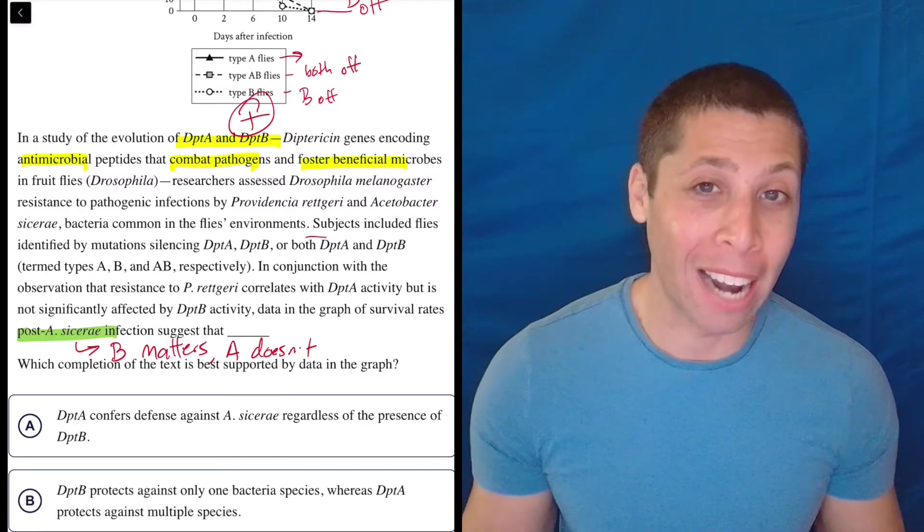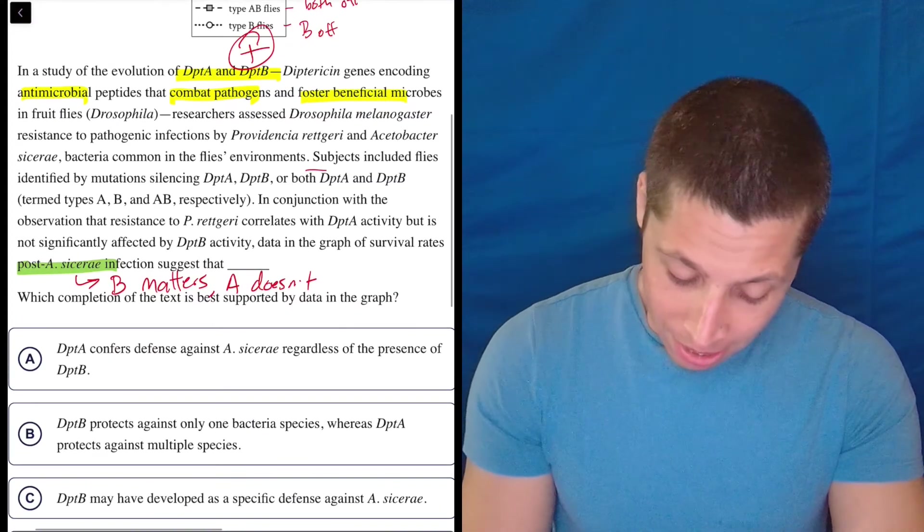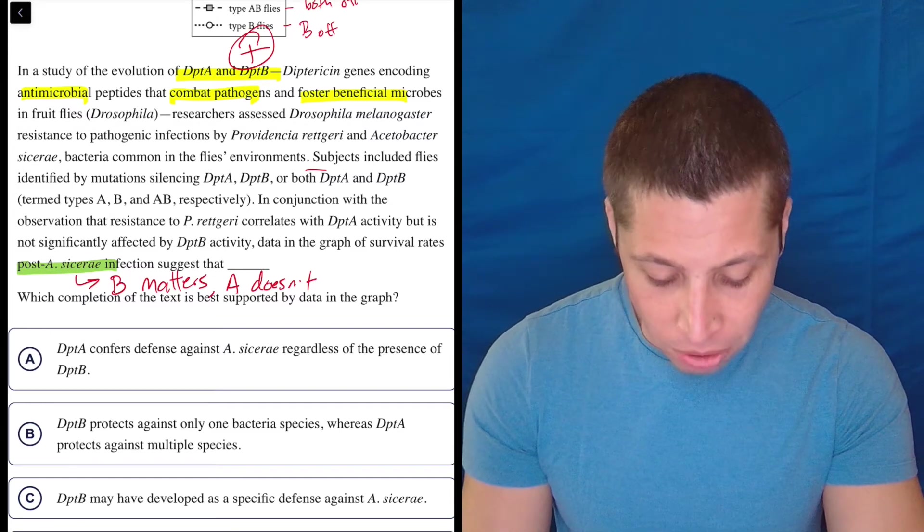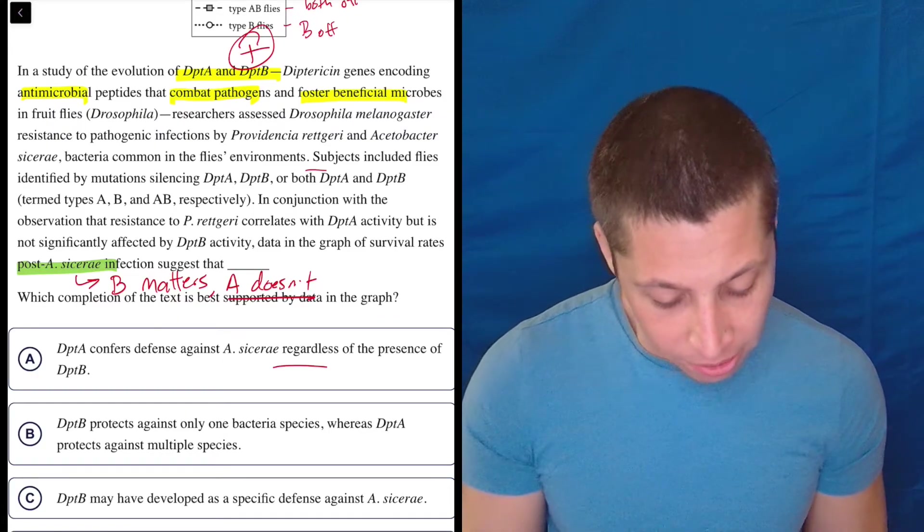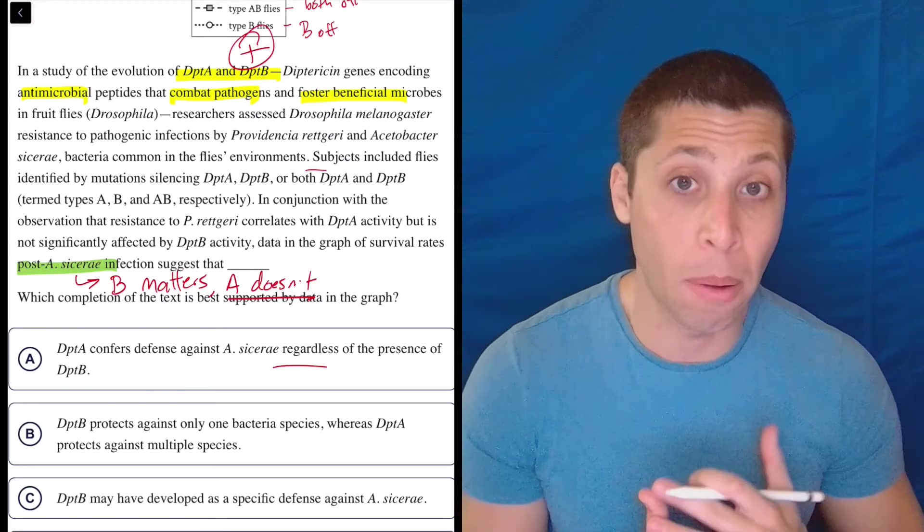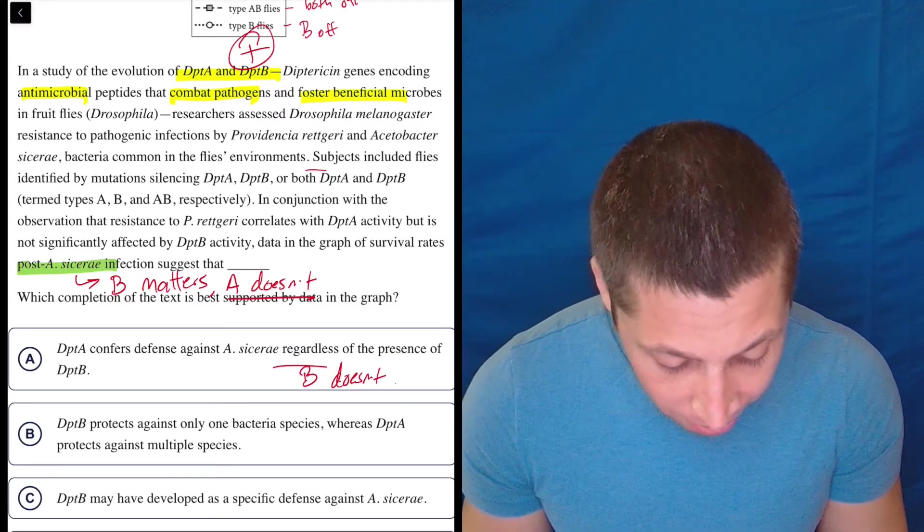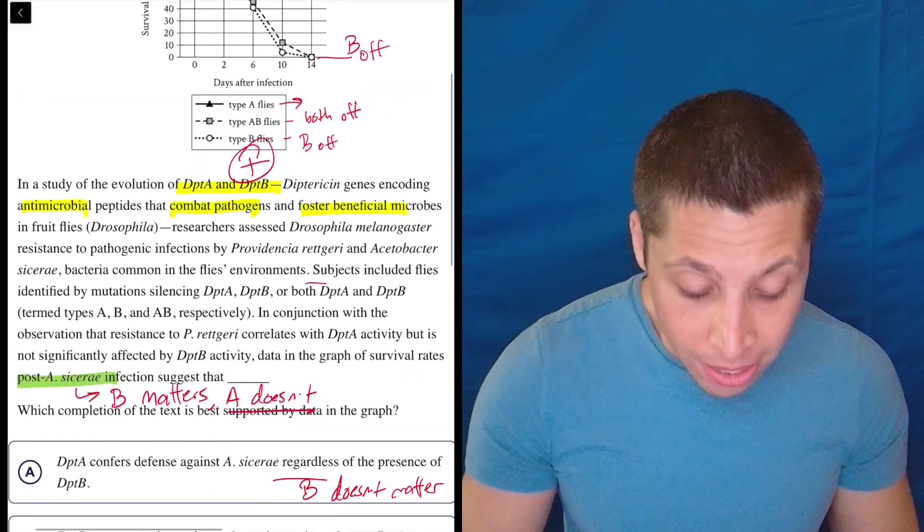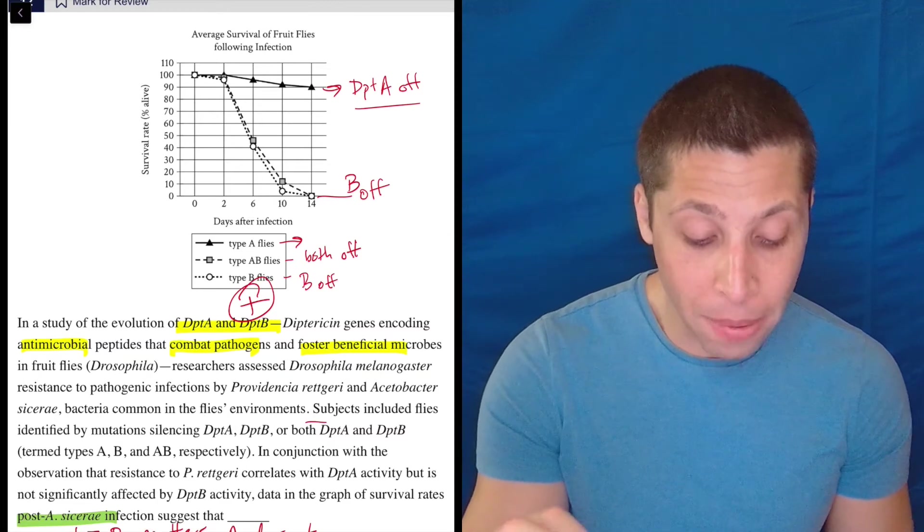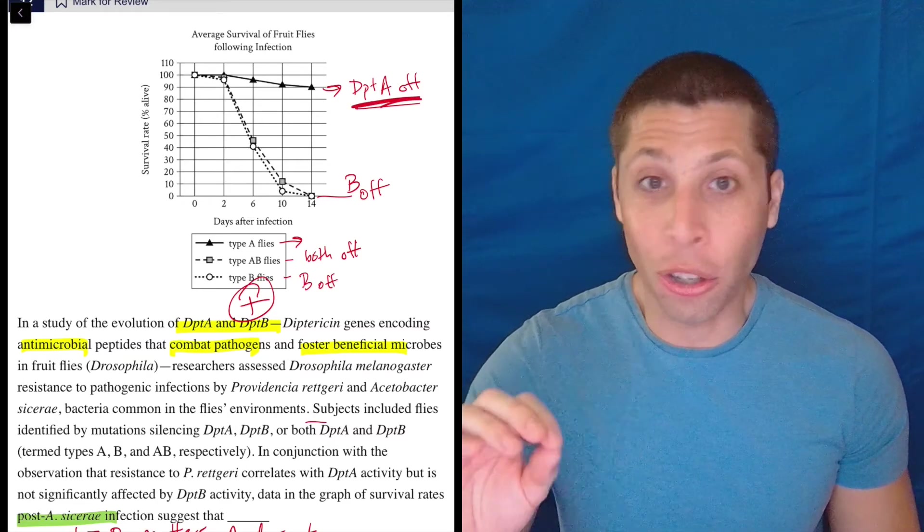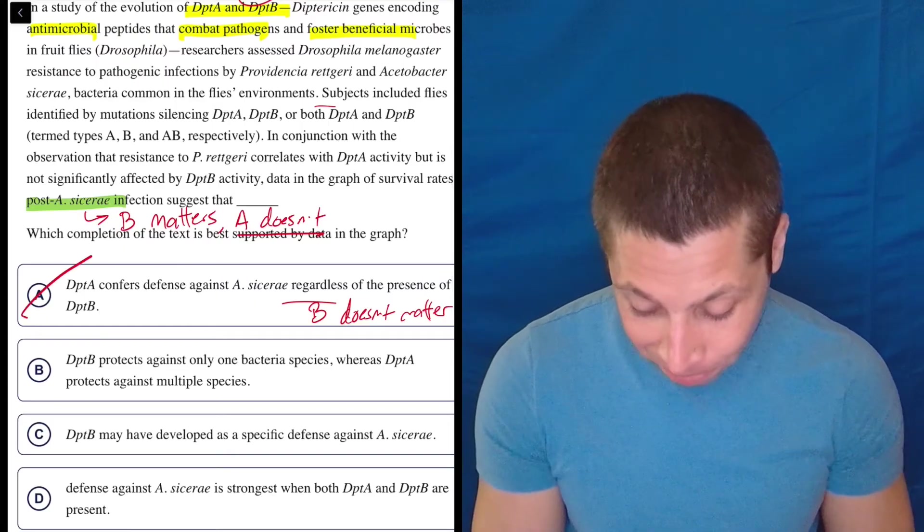So let's, that's maybe a dumb summary, but oh my God, I've already done way more work for this than I normally would do for any question. So this is already way past dumb, in my opinion here. So, okay, what's supported by the graph? Choice A: DptA confers defense against A. sicerae. No, it doesn't. Right. That's what we just said. It doesn't, regardless of the presence of DptB. So regardless is one of those words we should always notice when we have science passages, because it's telling you something doesn't matter. So when it says regardless of the presence of DptB, this is saying B doesn't matter, but we just said that it does because if B is turned off, the flies die, right? So we need B to be on, otherwise they die. So this top line here where it says DptA is off, that is not turning off B. B is still good. So they're surviving because they have B. Turn off B, they're dead. So that's me saying this is wrong.